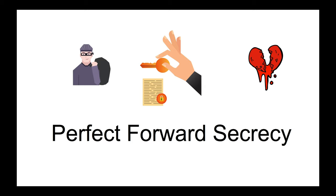Perfect forward secrecy, or just forward secrecy, is a property of an encryption system that prevents an attacker from decrypting previously recorded sessions even after the private key of the server is leaked. A few years ago, the Heartbleed problem in OpenSSL happened and a lot of server private keys got leaked, which surfaced this issue.